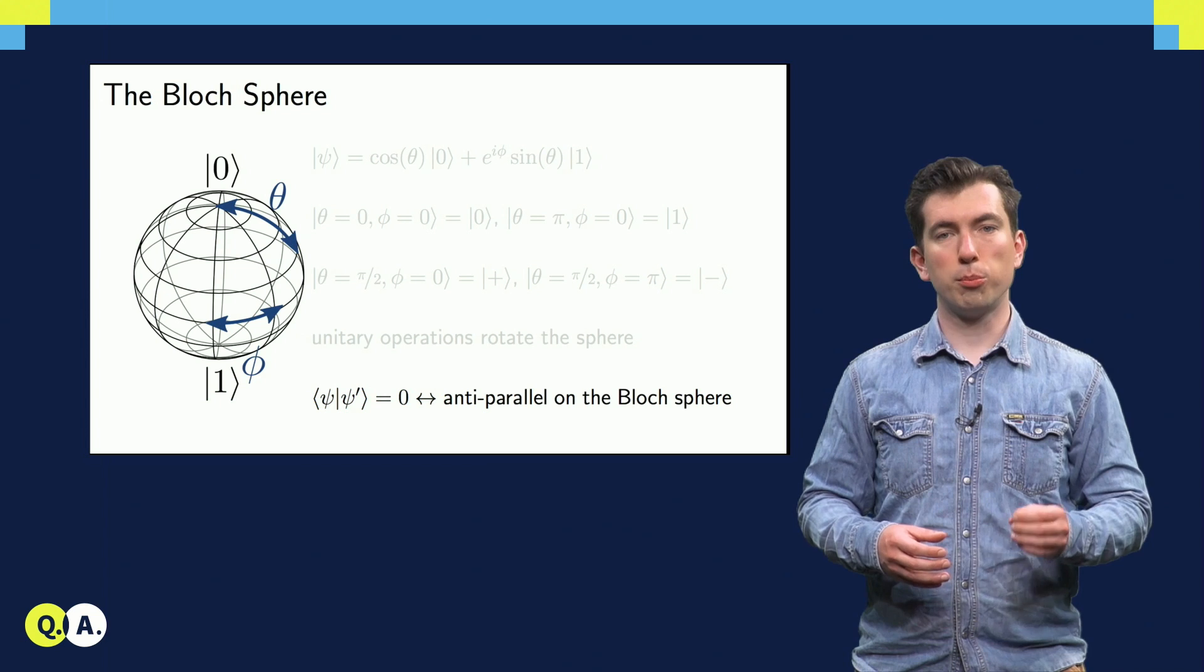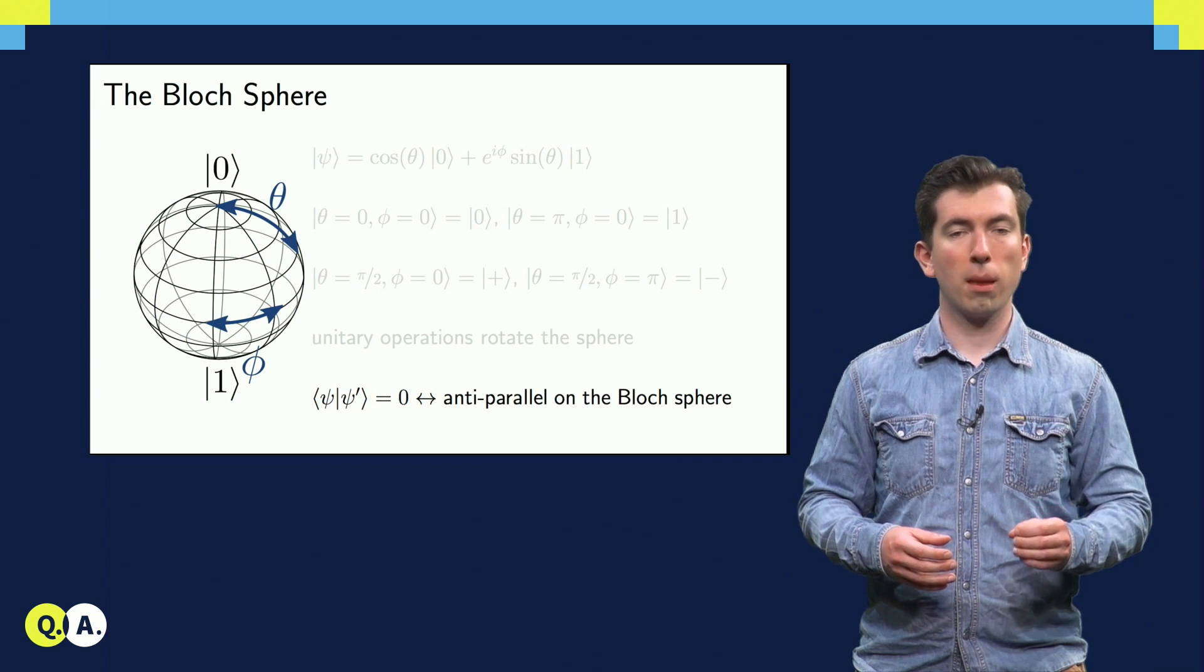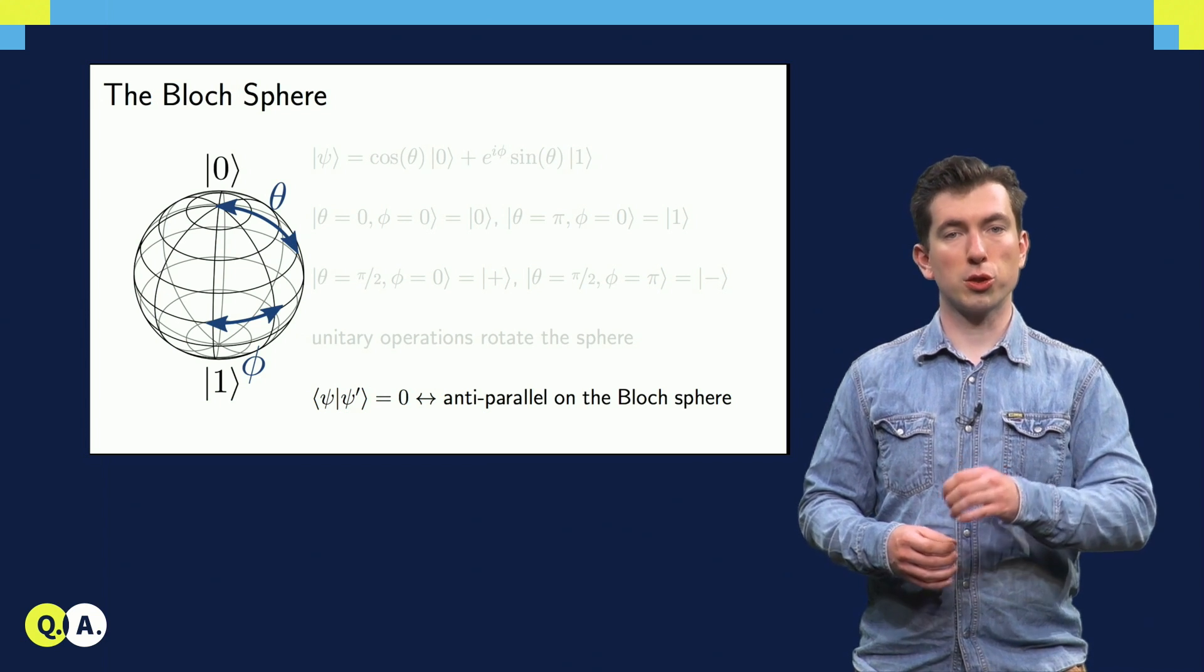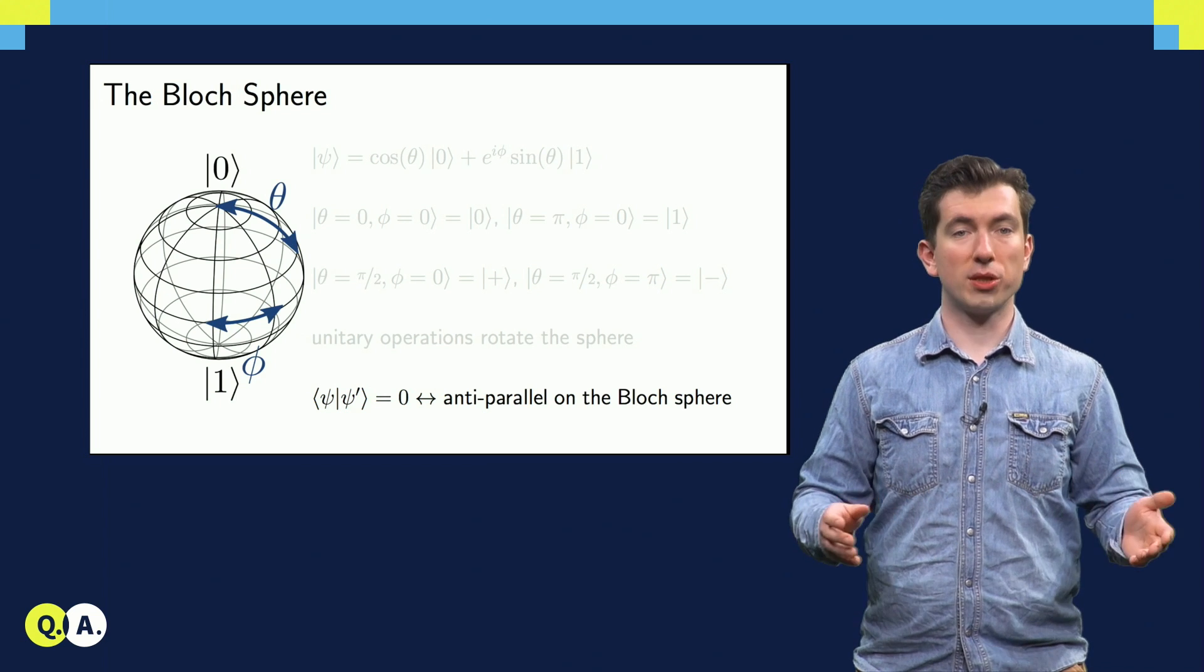But how do we describe multi-qubit states and operations? Specifically, how do we build them up from operations on smaller subsystems of a many-qubit state?